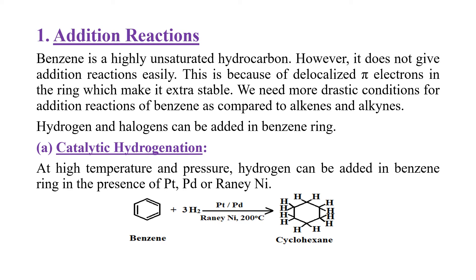हम hydrogen और halogen को benzene ring में add कर सकते हैं। पहले catalytic hydrogenation - catalyst required होगा, high temperature और pressure पर hydrogen को benzene ring में add किया जा सकता है। इसके लिए catalysts use होंगे: platinum, nickel। यह चीज़ नोट कीजिए कि since in benzene there are three double bonds, therefore three moles of hydrogen are required to convert it into cyclohexane।